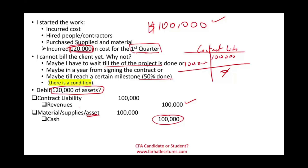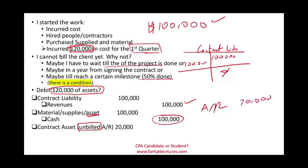I still have $20,000 to account for — I did the work and incurred the cost, whether that cost is cash or payable. What do I do with this additional $20,000 that I cannot bill the client yet? This is where contract asset comes into place. I'm going to debit an account called contract asset, which is unbilled accounts receivable. If I could bill them, it would be easy — I would debit accounts receivable and credit revenue. But I cannot debit accounts receivable because I cannot invoice them yet.